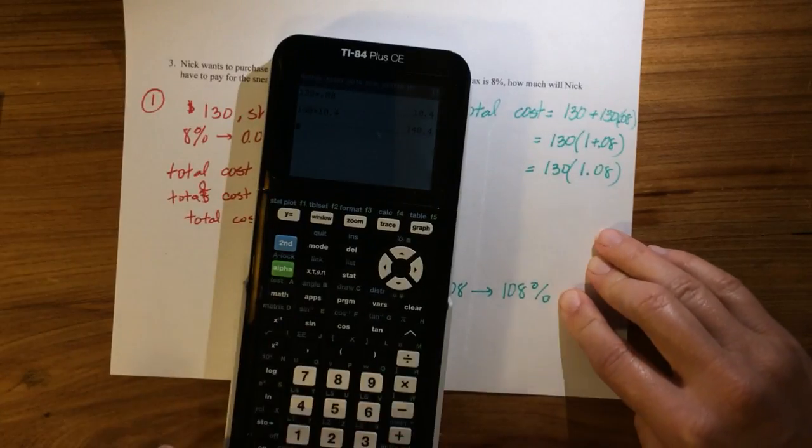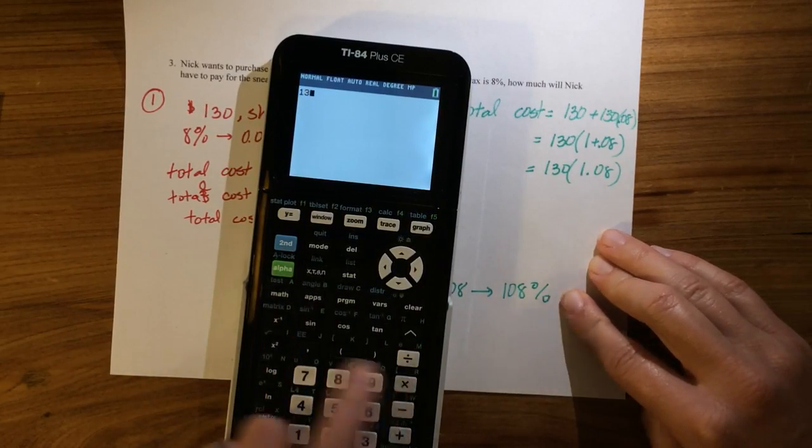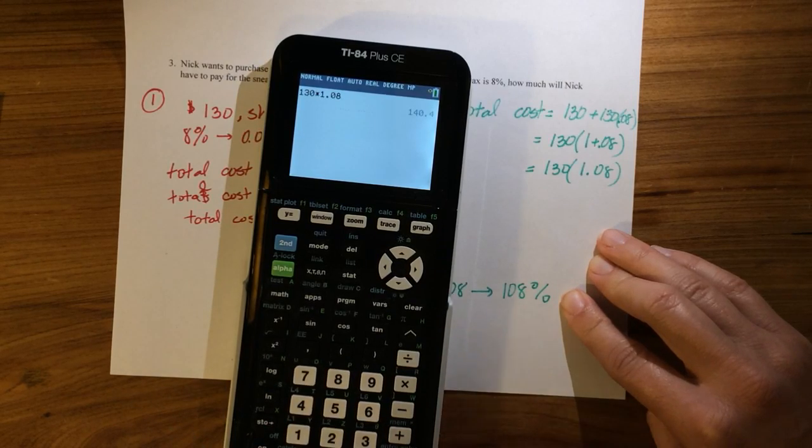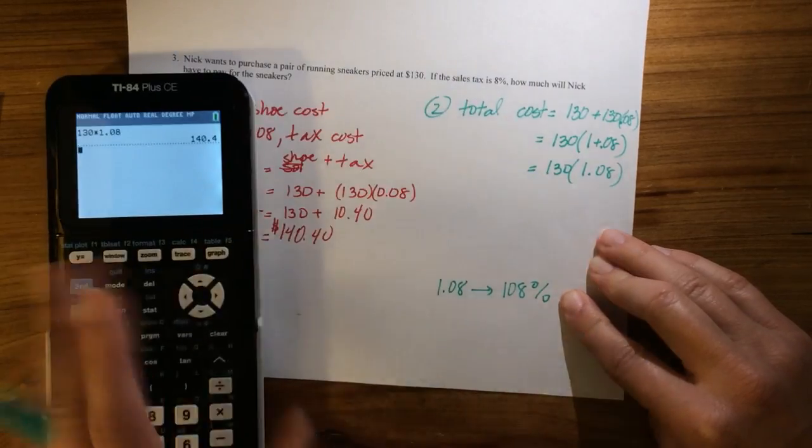So, and I'll show you with the calculator, 130, add the zero, times 1.08 is indeed the 140.4.